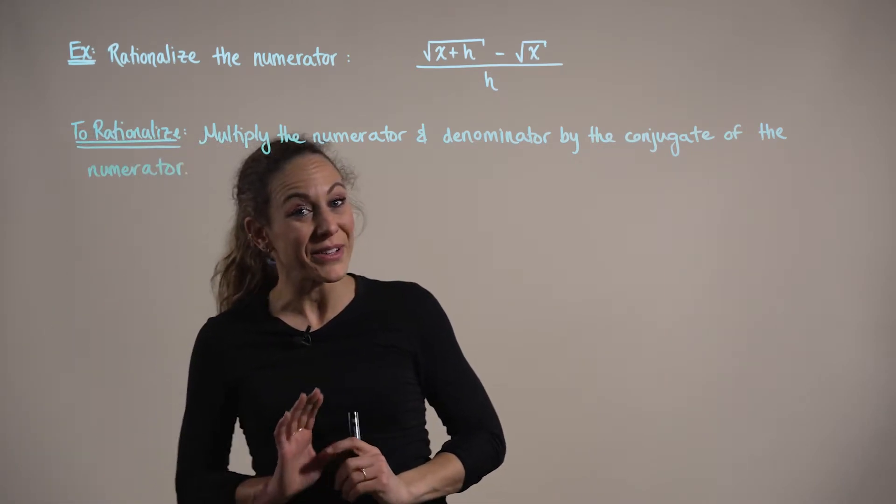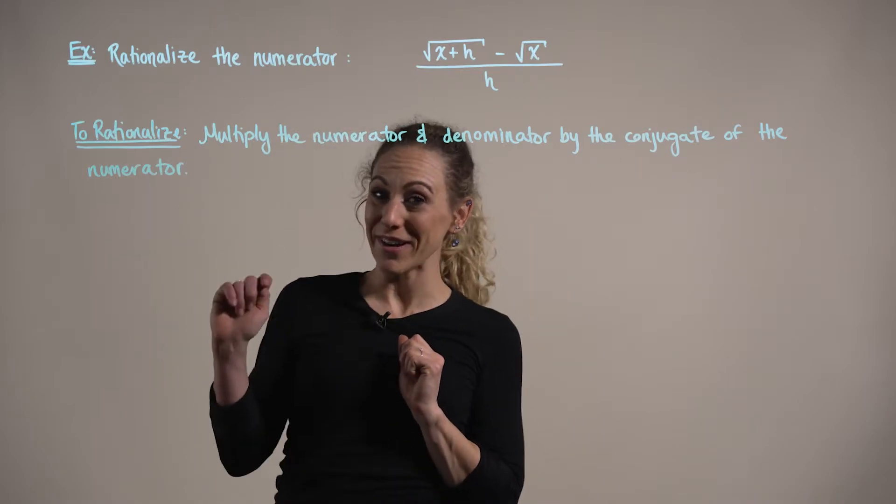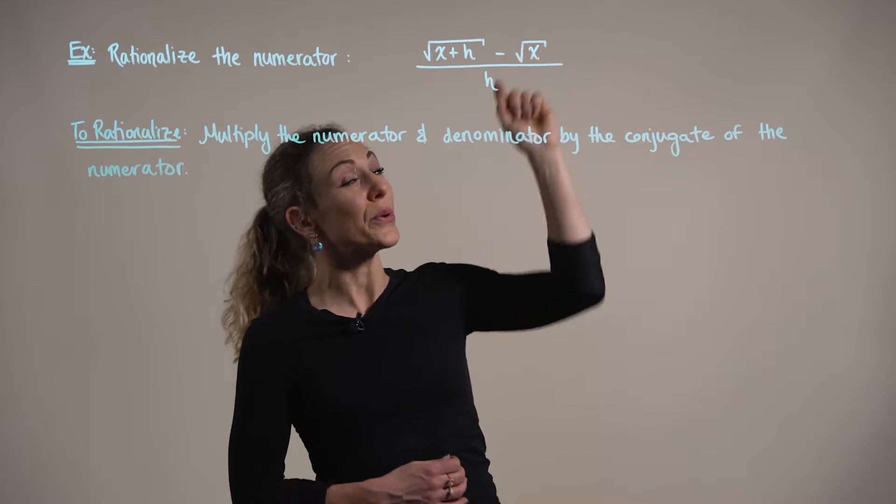The reason that we're multiplying the numerator and denominator by the conjugate of our numerator is that ultimately we want to get rid of these square roots.